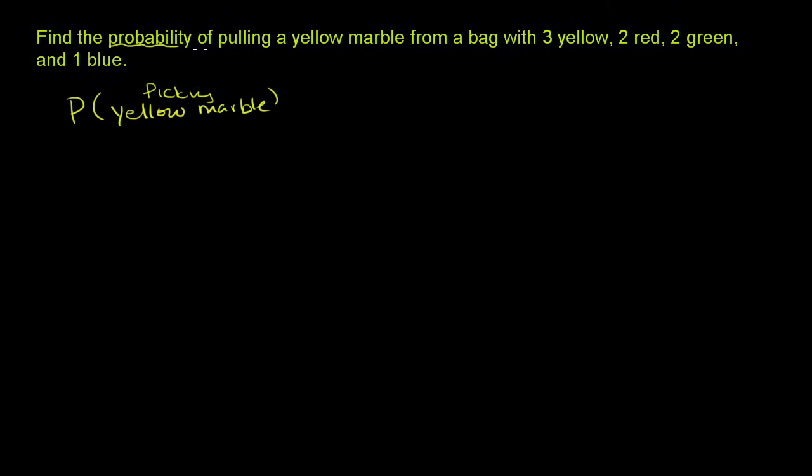And when you say probability, it's really just a way of measuring the likelihood that something is going to happen. And the way we're going to think about it is how many of the outcomes from this trial, from this picking a marble out of a bag, how many meet our constraints, satisfy this event, and how many possible outcomes are there?